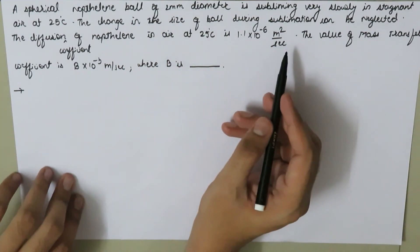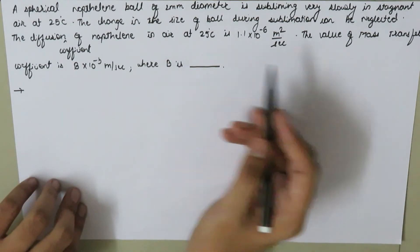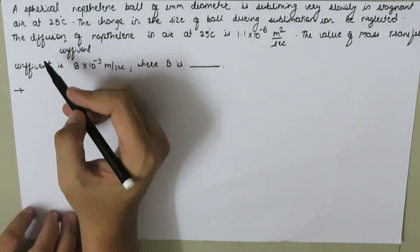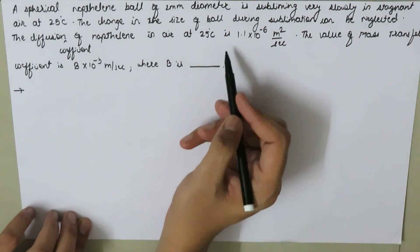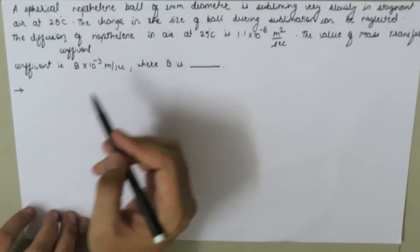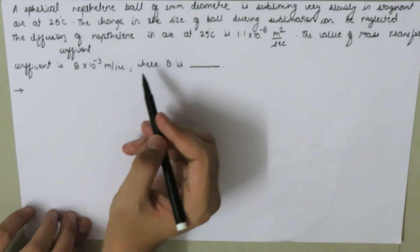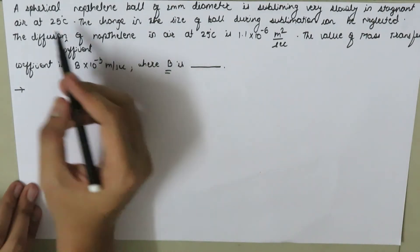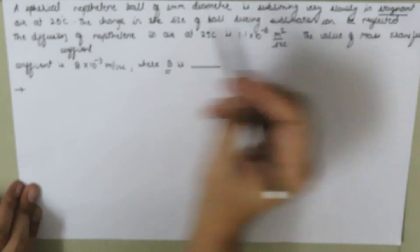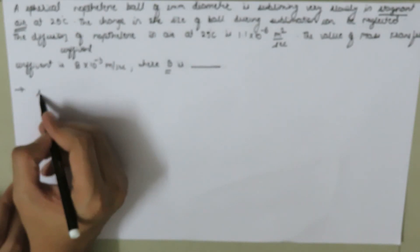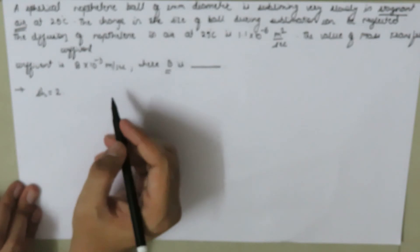The change in the size of the ball during sublimation can be neglected. The diffusion coefficient of naphthalene in air at 25 degrees Celsius is 1.1 times 10 to the power minus 6 meter squared per second, and the value of the mass transfer coefficient is B times 10 to the power negative 3 meter per second. We need to find what B is. The key term here is 'stagnant air,' meaning the velocity of air is zero, so the Reynolds number is very low and the Sherwood number equals 2.